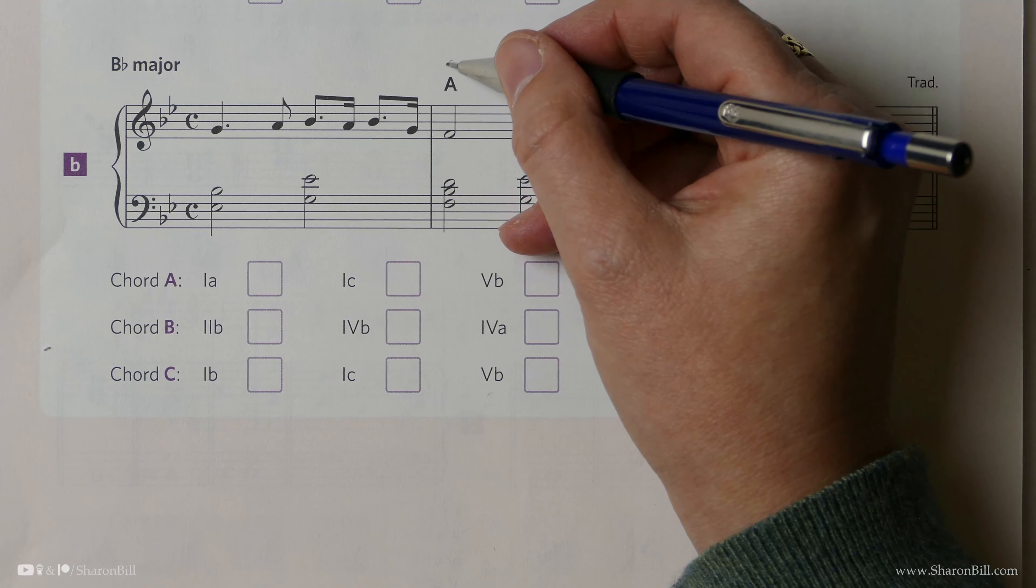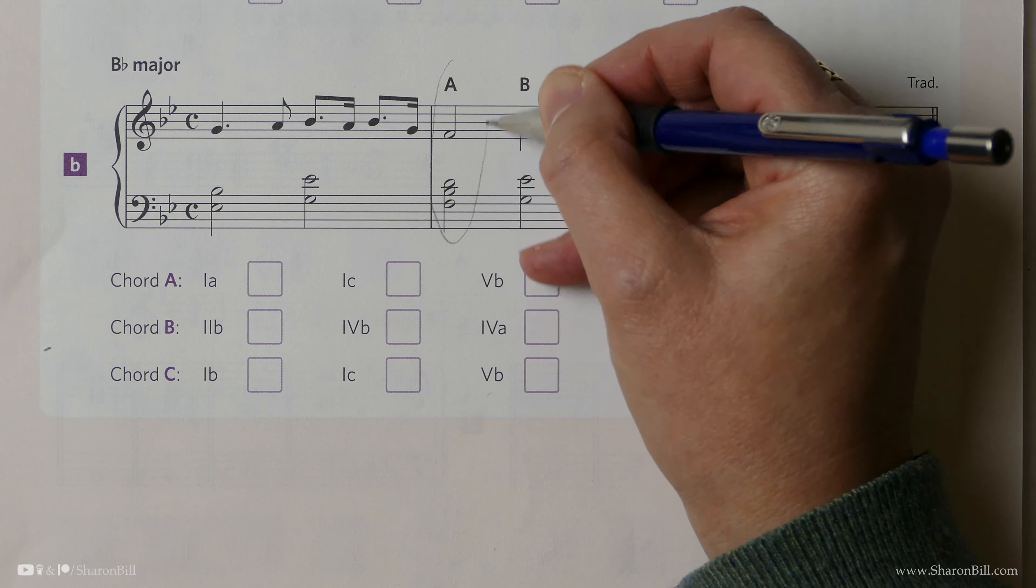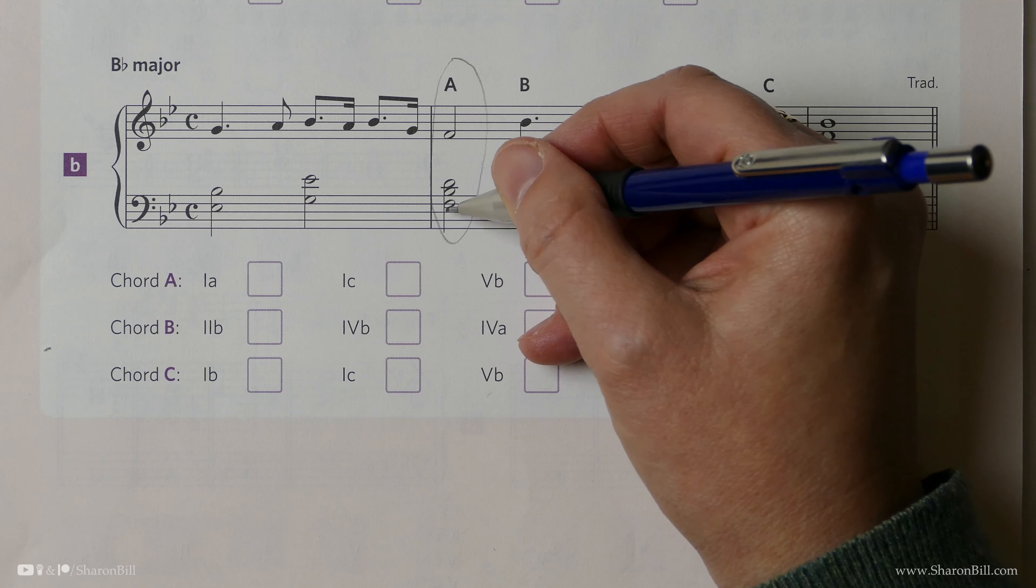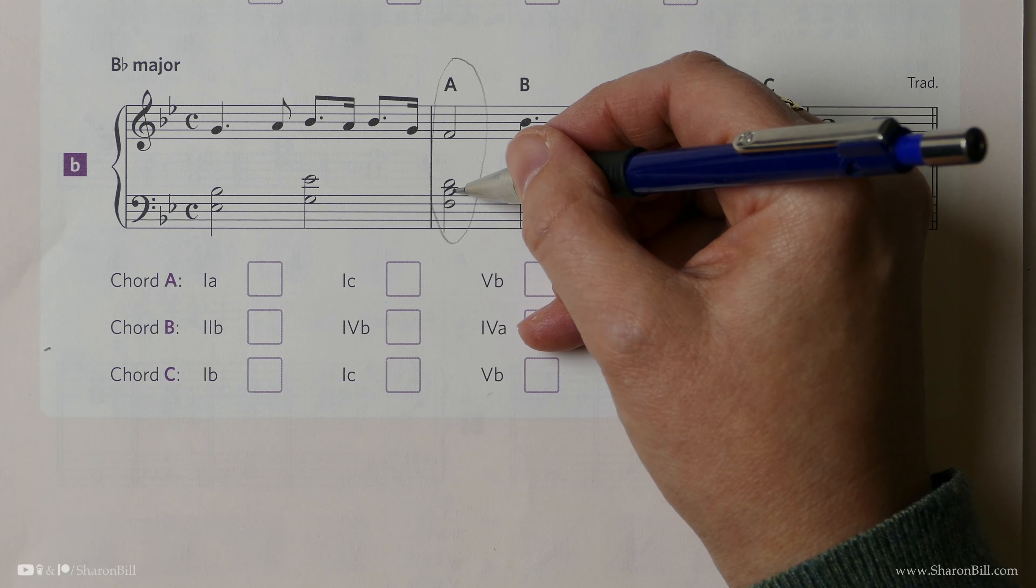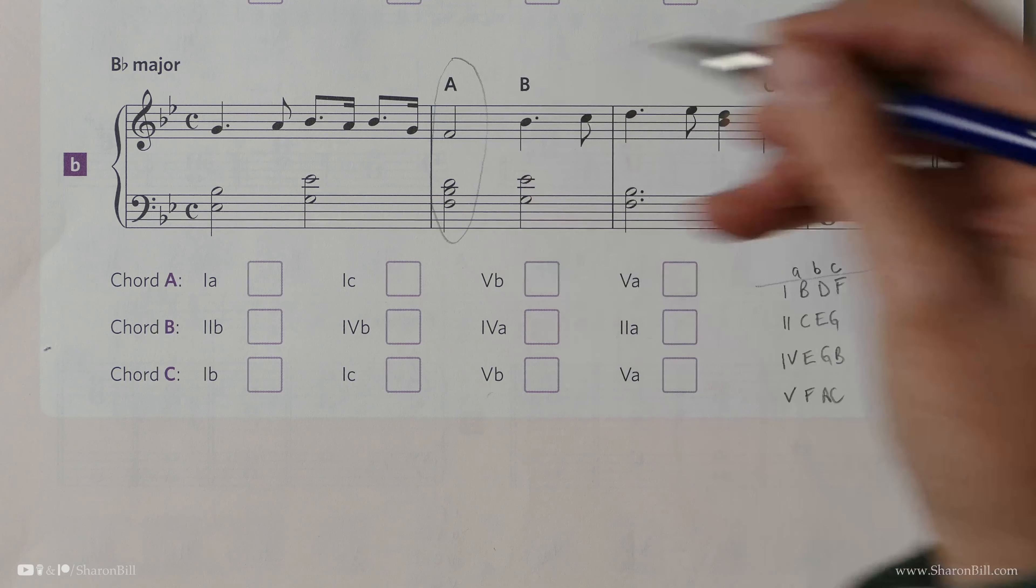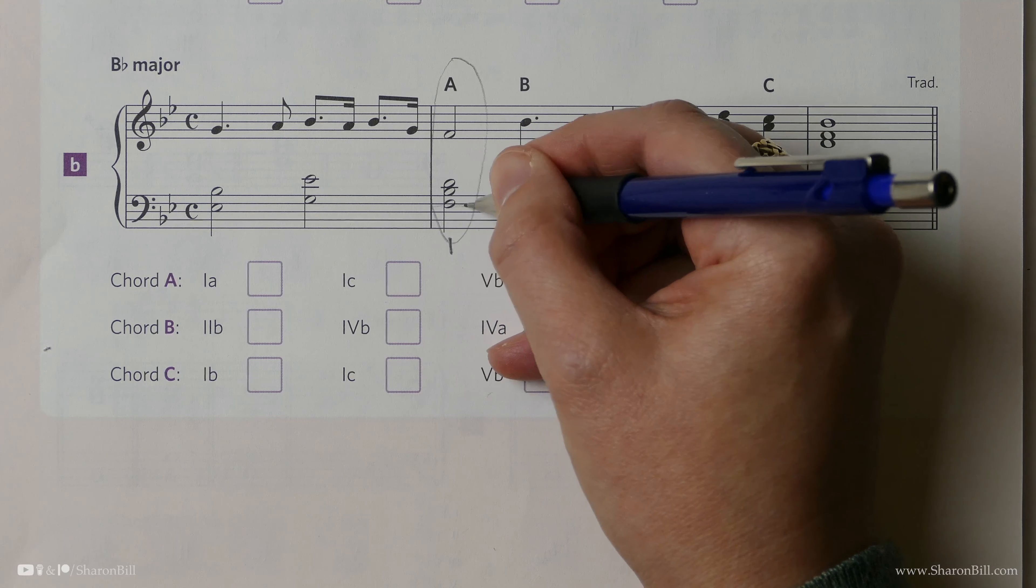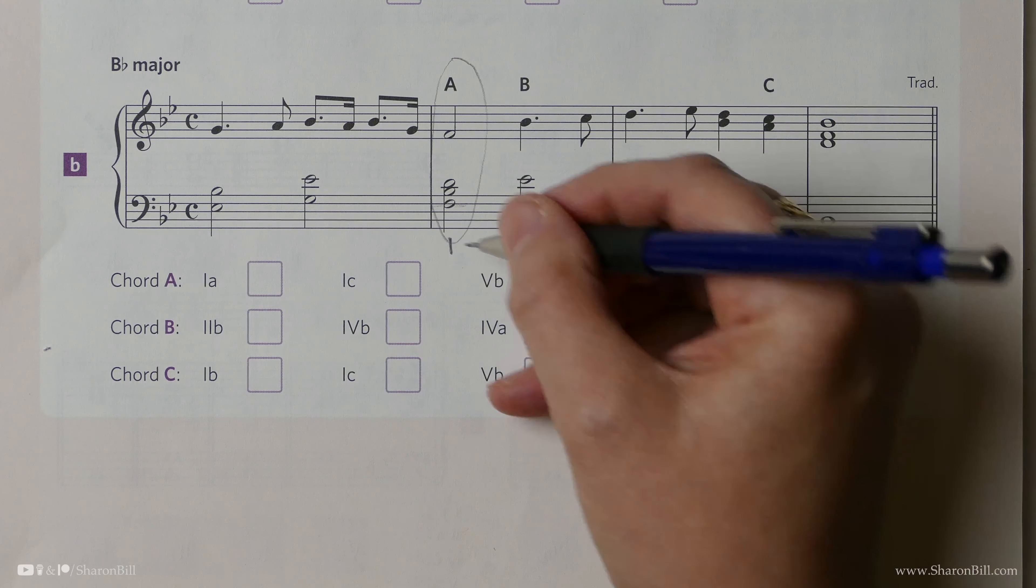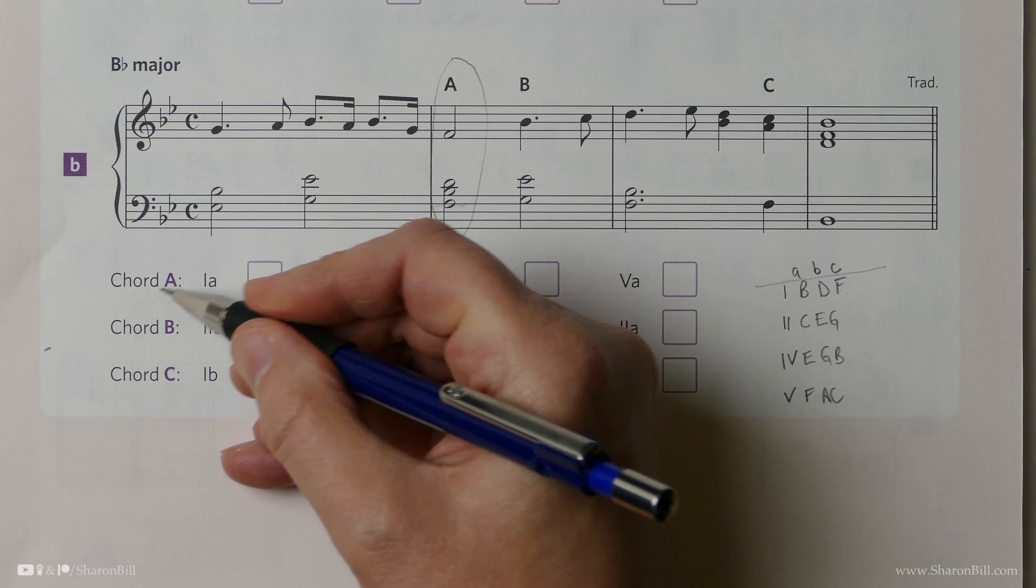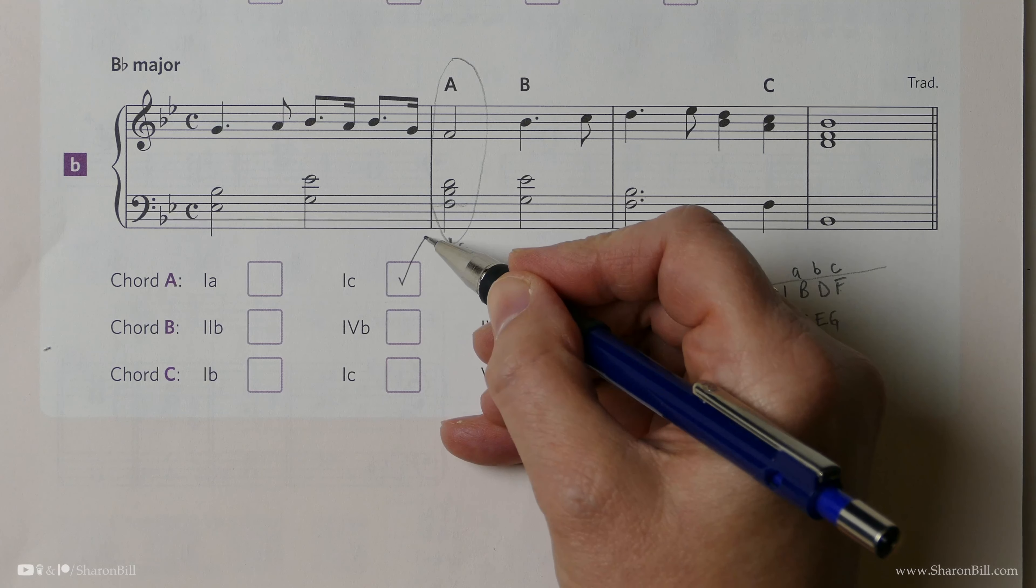Chord A, we need to describe this. So we have an F, a B flat, D, F. That's a chord 1. And the lowest note is F, so that's a 1C. So we can choose chord A is 1C.